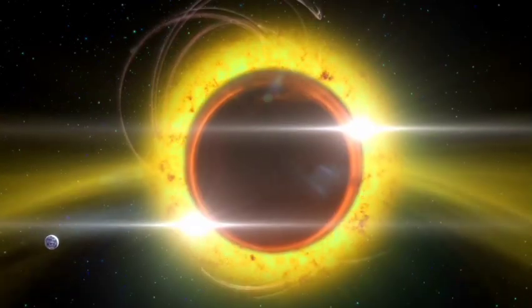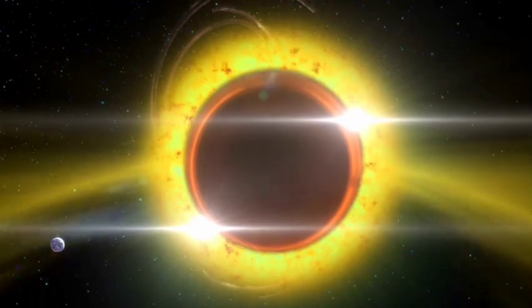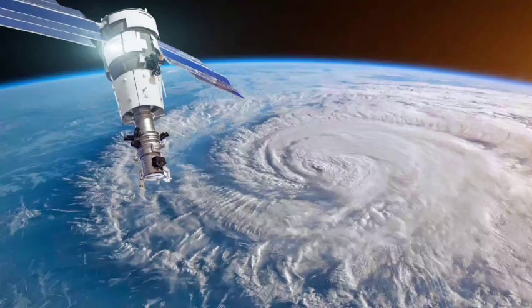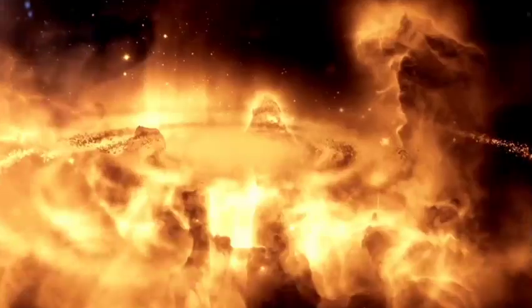Despite its cooler temperatures, TRAPPIST-1 emits a faint Earth-like glow suggesting that its planets could harbor life. Similarly, Proxima Centauri, the closest large star to our solar system, is a dim star.